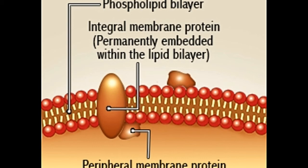It was in the early 1970s that the discovery regarding the structure of the cell membrane, as a combination of cholesterol and phospholipids forming a lipid bilayer with embedded proteins, was made.